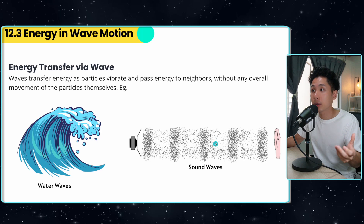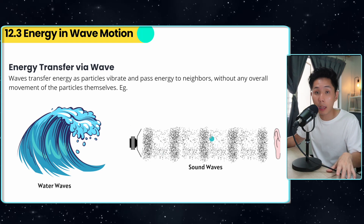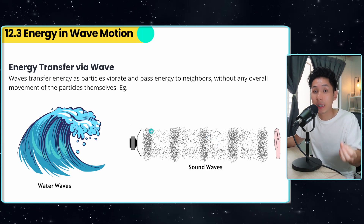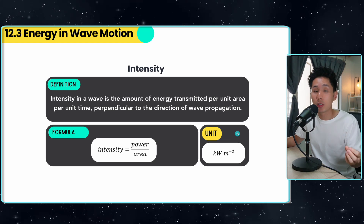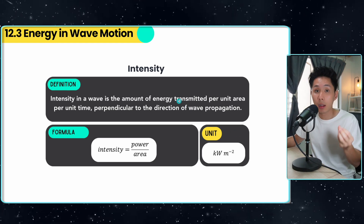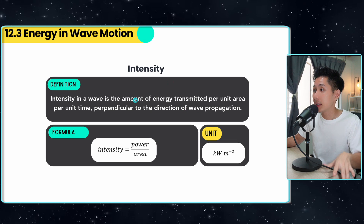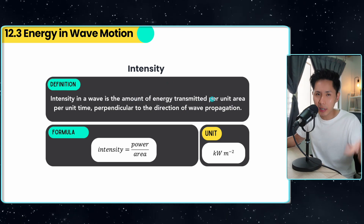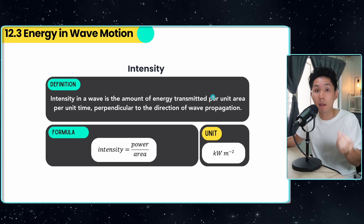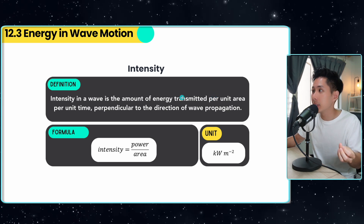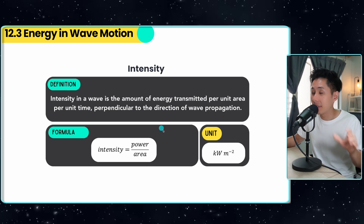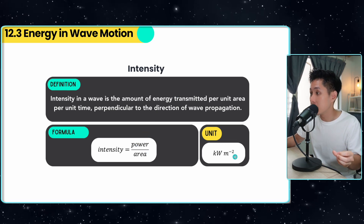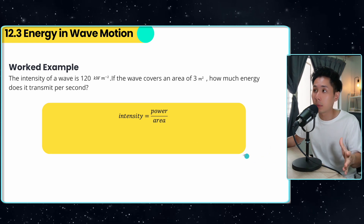Now let's look at how energy is transferred through waves. We have water waves and sound waves. As energy is transferred, the particles do not move from their place. To understand energy transfer, we need to understand intensity: the amount of energy transmitted per unit area. It's a bit like pressure — pressure is force over area, but intensity is energy over area. The formula to calculate it is power divided by area.